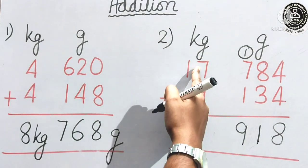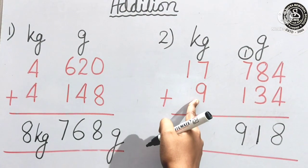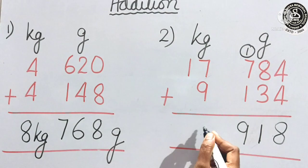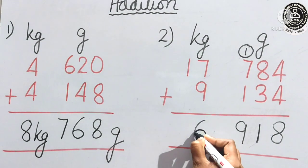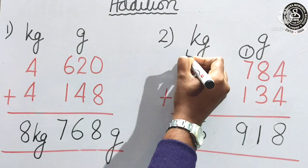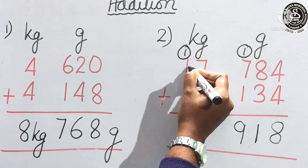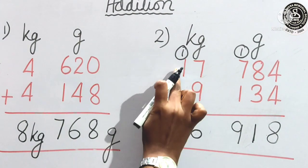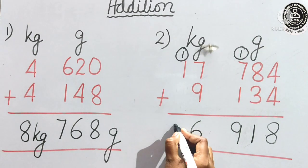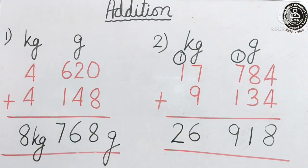Now, come to here. 7 plus 9. What we get? 16. Again, 1 carry over we are getting. 1 we will not write. So, we will write here carry over. So, 1 is left. So, 1 is left. Here no number. So, 1 plus 1. We will get 26.